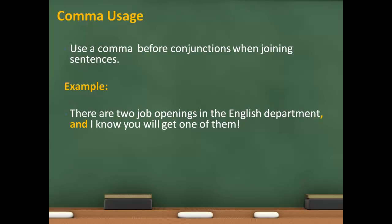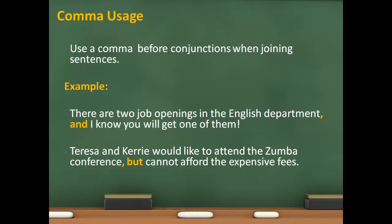Now, a comma before 'and' is not necessary in a series of items, but when you are joining two separate parts of a sentence, as in this example, then a comma is necessary before the 'and'. Teresa and Carrie would like to attend the Zumba conference, but cannot afford the expensive fees. So when conjunctions are functioning to join two parts of a sentence, always put a comma before the conjunction.